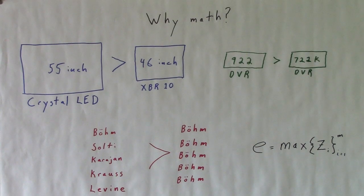All of these fundamental concepts are inherently mathematical. Whether it's a higher quality TV like the crystal lead, a more convenient DVR, or the variety of my five different Wagner ring sets, which is more than five copies of Karl Bohm's ring, even though it's my favorite.